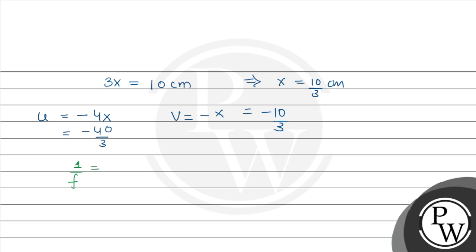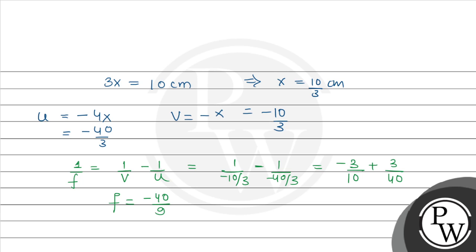Applying the lens formula: 1/f = 1/v minus 1/u = 1/(minus 10/3) minus 1/(minus 40/3) = minus 3/10 plus 3/40. Solving this gives f = minus 40/9, approximately minus 4.4 cm. So our focal length is minus 4.4 cm, which is the required focal length.